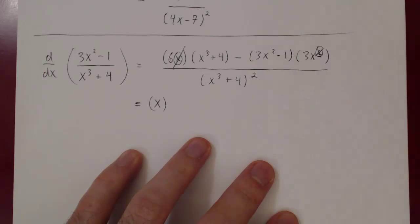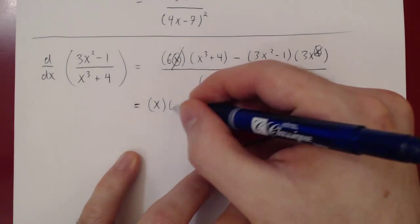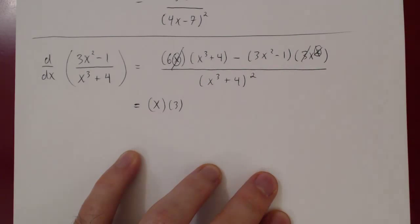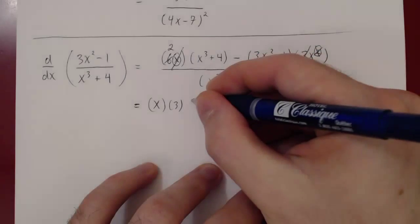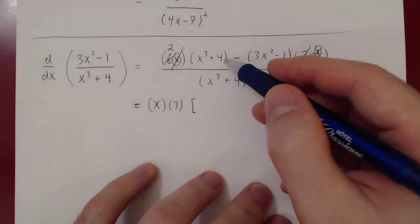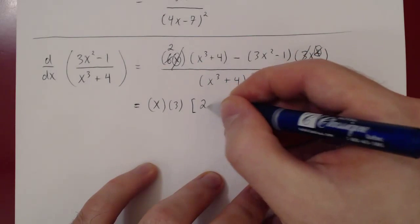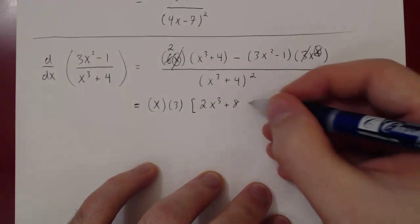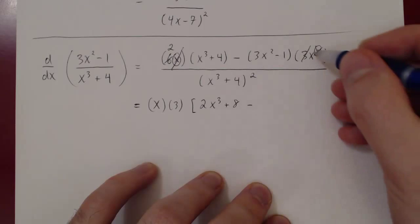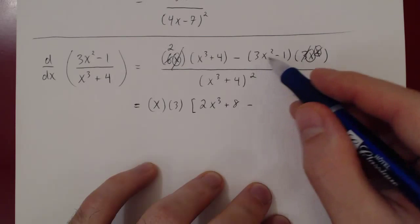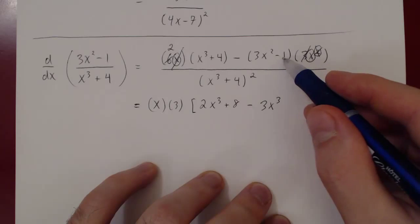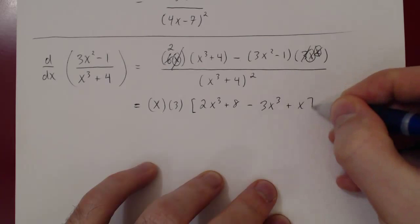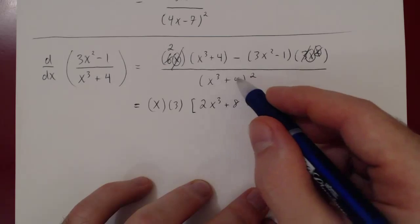There's also a factor of 3, so let's factor that out too. The 3 is gone, and factoring 3 from 6 leaves 2. Now we have 2 times the cubic minus the quadratic times x, with no more common factors. Multiplying out: 2 times (x³ + 4) gives 2x³ + 8; minus (3x² − 1) times x gives 3x³ − x, and taking the negative gives −3x³ + x. That's our numerator, all over (x³ + 4) squared.